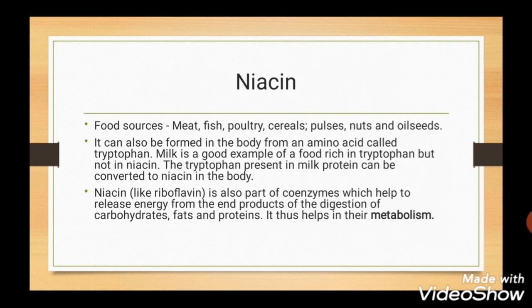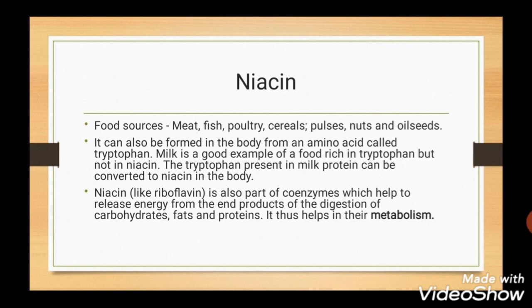Niacin. Food sources are meat, fish, poultry, cereals, pulses, nuts, and oilseeds. Milk is rich in tryptophan, an amino acid that can be converted to niacin in the body. Niacin is a part of a coenzyme which helps to release energy from the end products of digestion of carbohydrates, fats, and proteins, thus helping in their metabolism.